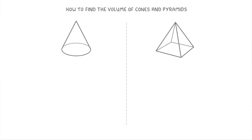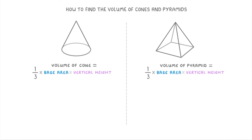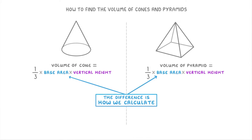In this video we're looking at how to find the volumes of cones and pyramids. We've grouped them together in this same video because they both have basically the same formula, namely that their volume is equal to one third times their base area times their vertical height.